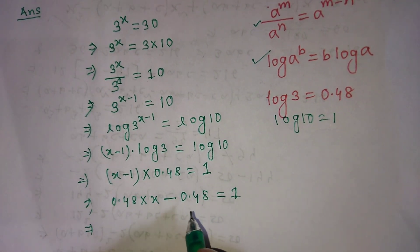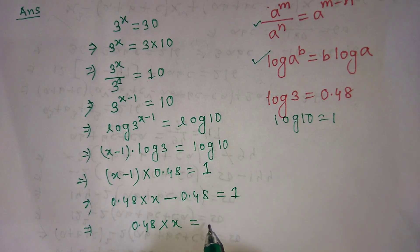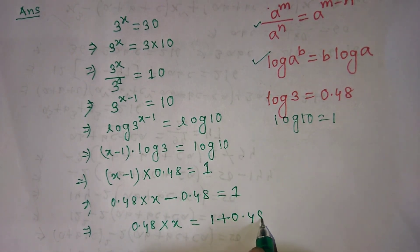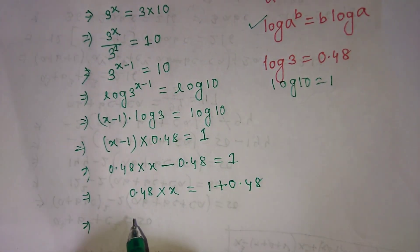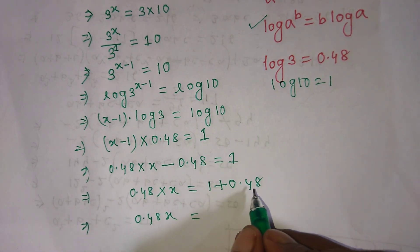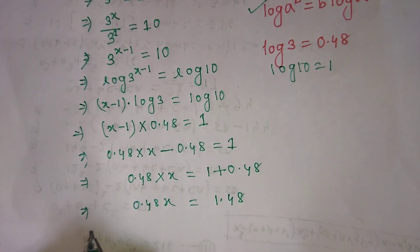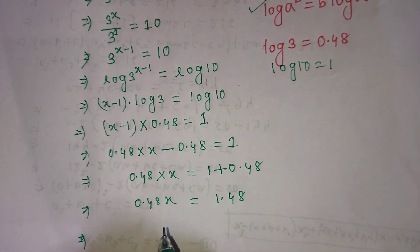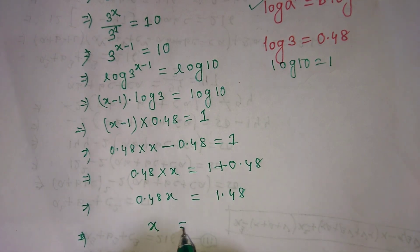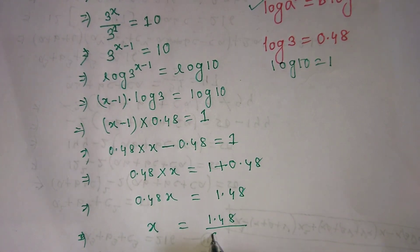After that, we transpose 0.48 from the left side to the right side. So on the left hand side we write 0.48x, and on the right hand side we write 1 plus 0.48. Adding 0.48 to 1 gives 1.48. So 0.48x is equal to 1.48. To find x, we transpose 0.48 to the right side, giving x equals 1.48 over 0.48.